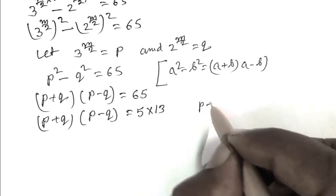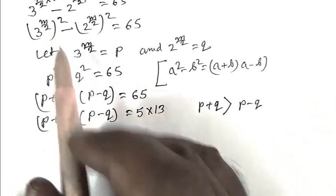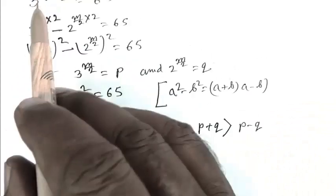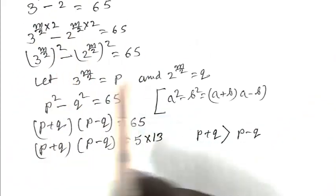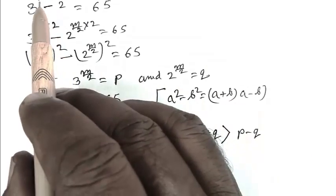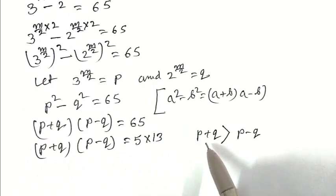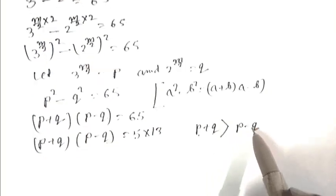P plus Q is greater than P minus Q, because M is a positive integer and 3 to the power M is greater than 2 to the power M. So we can write P plus Q greater than P minus Q.